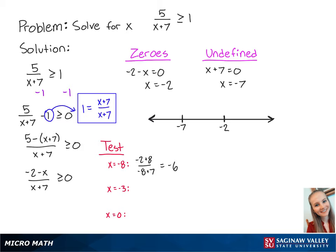Since this number is negative, this means that x values less than negative 7 will make the left side of the inequality negative. For x equals negative 3, we have negative 2 plus 3 over negative 3 plus 7, which is equal to 1 fourth. Since this number is positive, this means that x values between negative 7 and negative 2 will make the left side of the inequality positive.